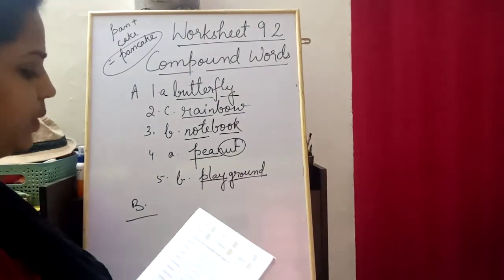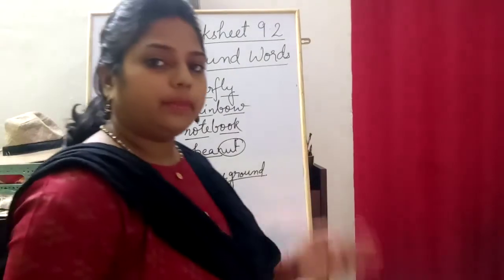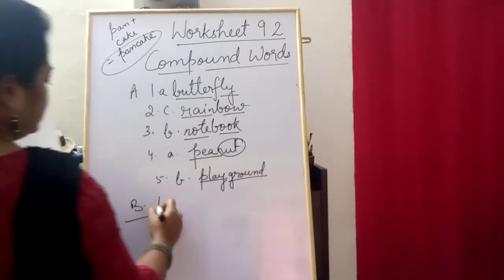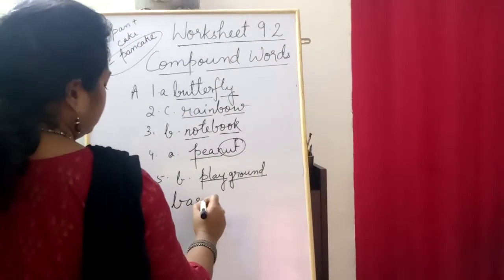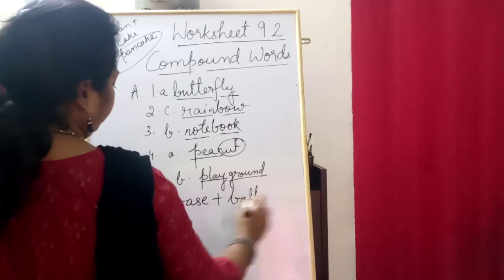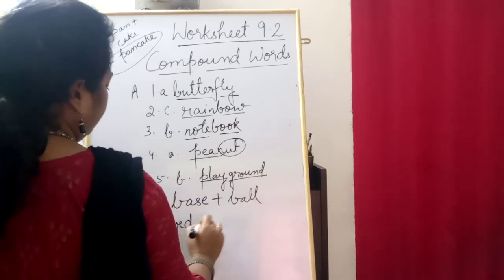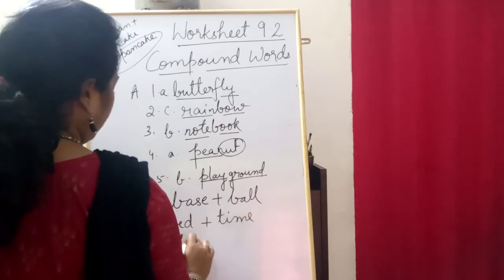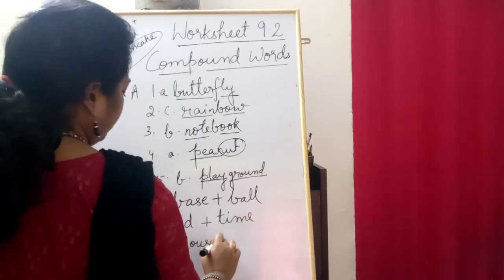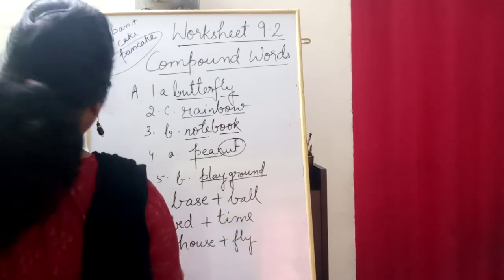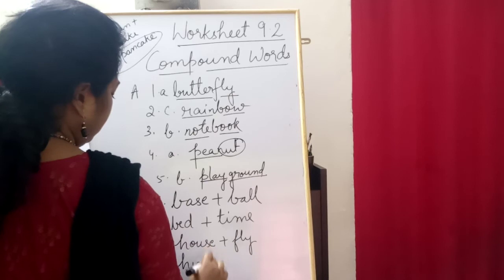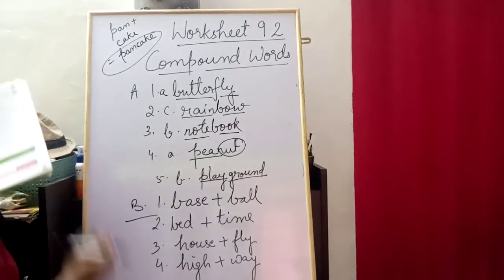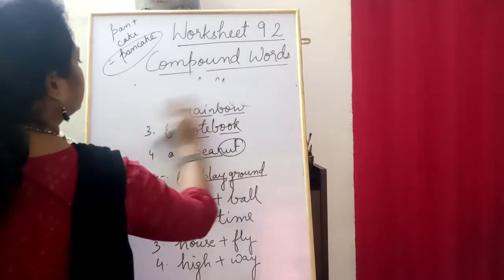Now come to Exercise B — what words are these compound words made of? Now you have to separate the two words from the compound word given. First is baseball — this is base and ball. Second is bedtime — bed and time. Third is housefly — house and fly. Fourth is highway — high and way.